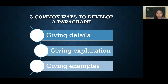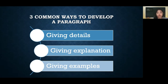There are three common ways to develop a paragraph. The first is by giving details, the second is by giving explanation, and the last is by giving examples. These three ways can be used one by one — for example, details in one paragraph, explanation in the next — or you can mix all of them within a single paragraph. You can choose whichever you prefer.